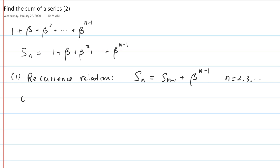Or you can write down Sn plus 1 is equal to Sn plus beta to the n. These two recurrence relations are the same thing. It's just we are shifting the index.